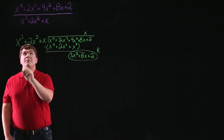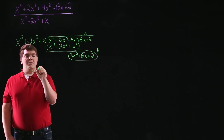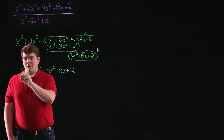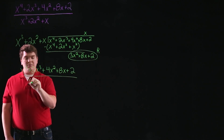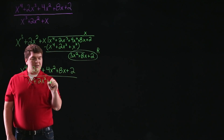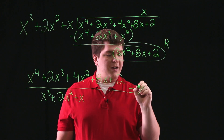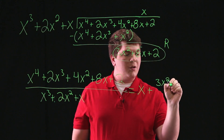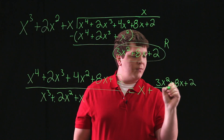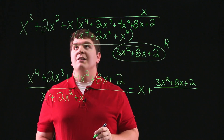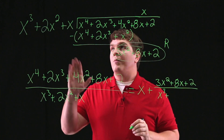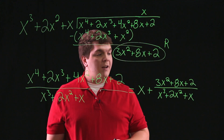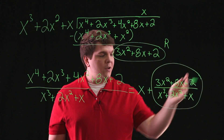So what we end up with is our rational expression: x to the fourth plus 2x cubed plus 4x squared plus 8x plus 2, all divided by x cubed plus 2x squared plus x. We have that this is equal to x plus the remainder 3x squared plus 8x plus 2 all divided by x cubed plus 2x squared plus x. Now what we're going to focus on is finding the partial fractions decomposition of this remainder term.